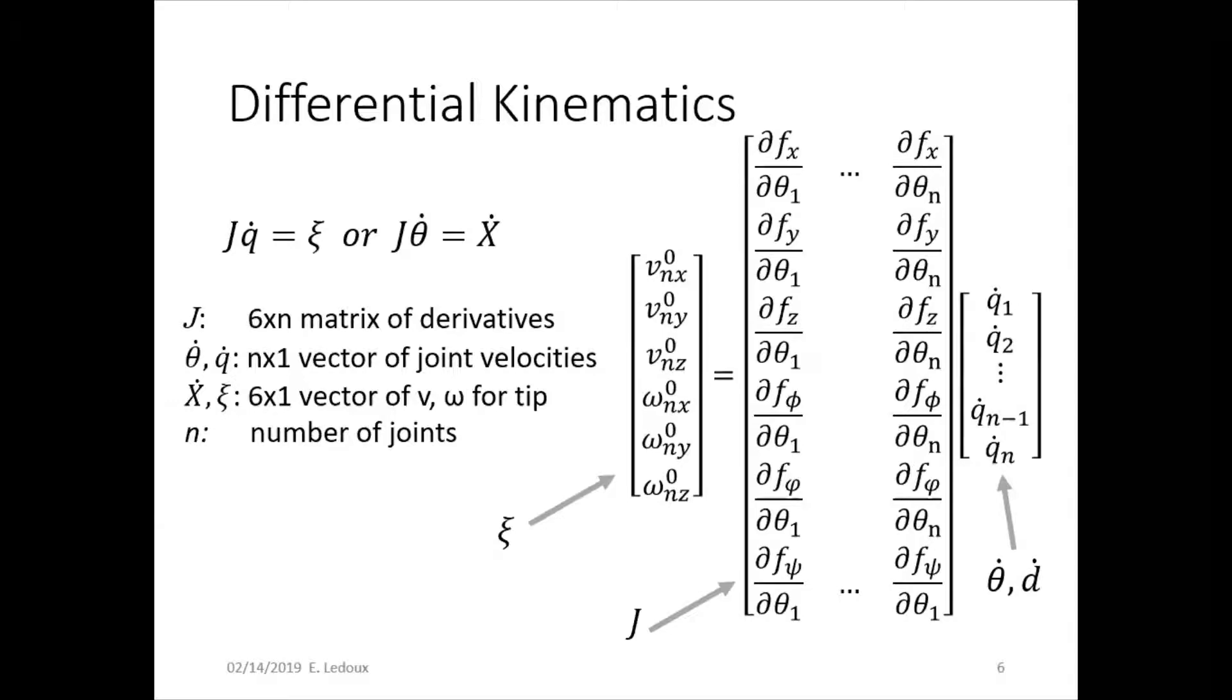We can see what that formula would look like here. x, y, z are the top three elements, and then roll pitch yaw are the bottom three elements. And then each column corresponds to each joint.